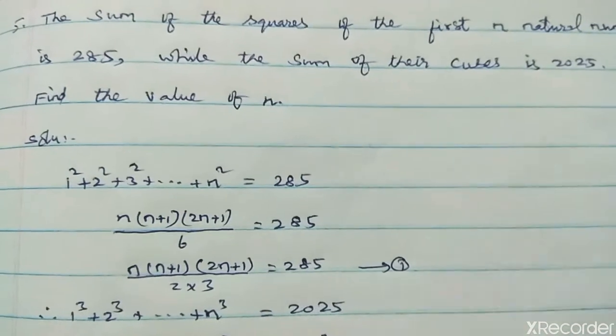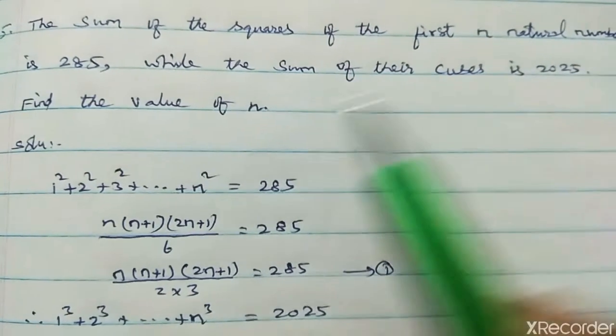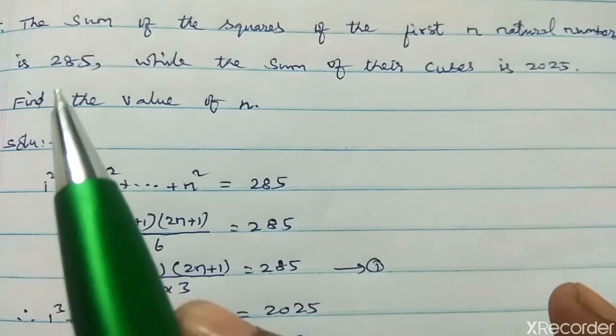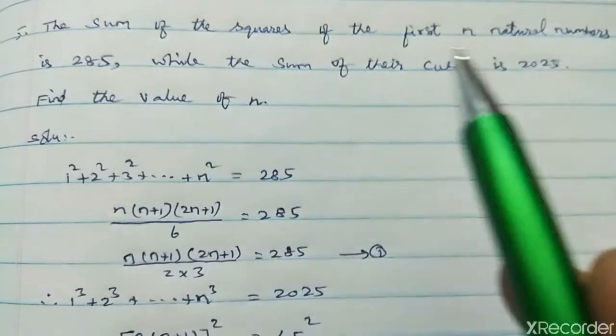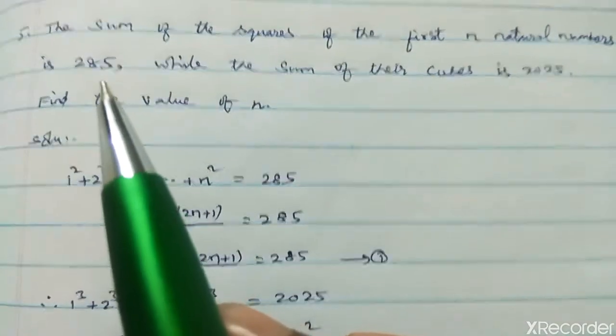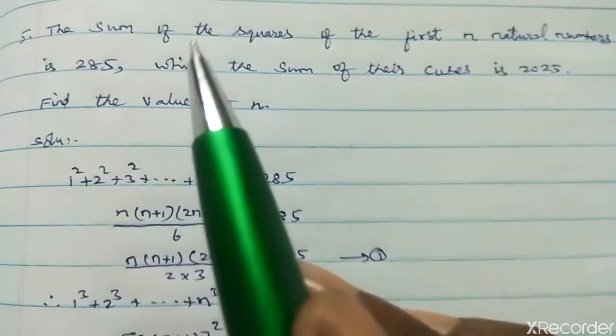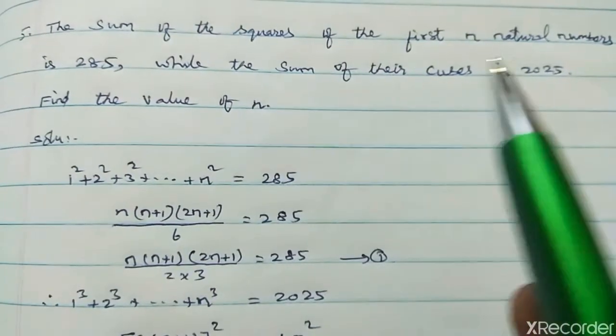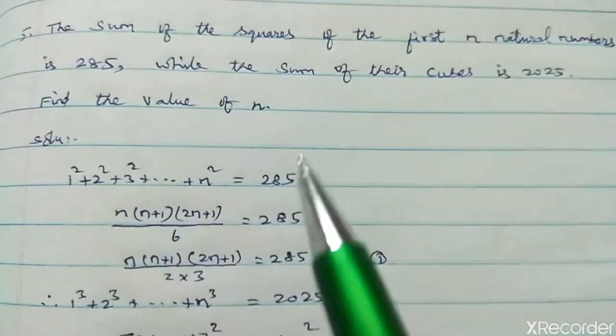The sum of the squares of the first n natural numbers is 285. Now, 1 square plus 2 square plus 3 square up to n square equal to 285. That is given.